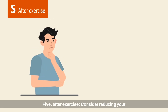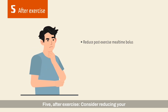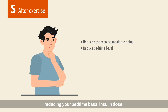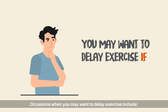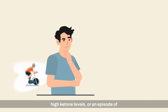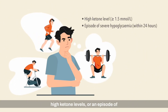After exercise: consider reducing your post-exercise mealtime bolus, reducing your bedtime basal insulin dose, or taking a carbohydrate top-up. For insulin pump users, a temporary basal reduction can be considered. Occasions when you may want to delay exercise include high ketone levels or an episode of severe hypoglycemia within the last 24 hours.